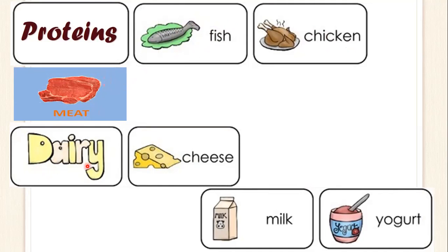Now we have the dairy. Dairy contiene todo lo que son lácteos. Esta palabra, dairy, es lácteos. For example, like cheese, milk, and yogurt. Now we talk about grains. Grains vienen a ser todo tipo de granos.